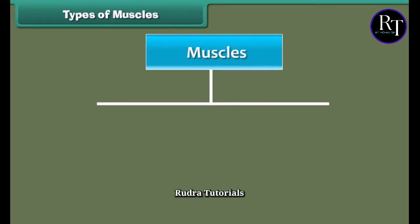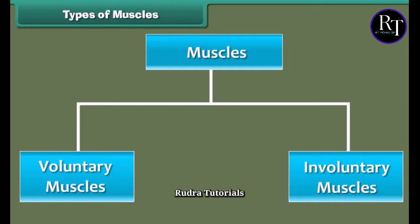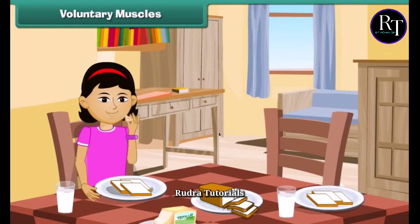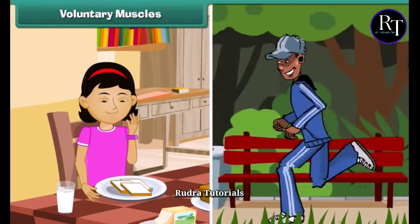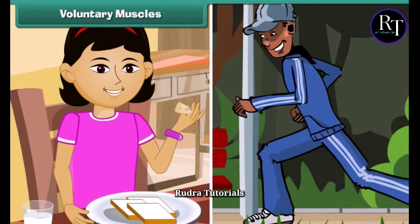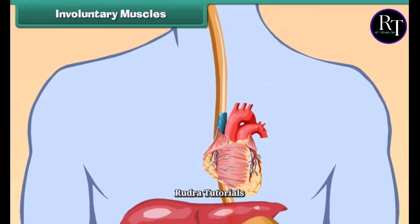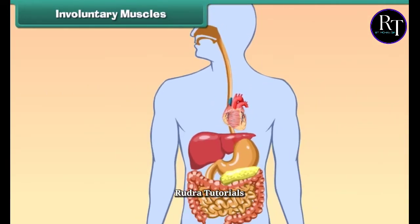According to the nature of their functions, muscles are of two types: voluntary muscles and involuntary muscles. Some actions are performed whenever we wish — like eating, walking, etc. — and we can start or stop these actions whenever we want. Muscles that carry out these actions according to our wishes or volition are called voluntary muscles, and movements brought about by them are called voluntary movements. Our arms and legs contain voluntary muscles. The functions of the stomach, intestines, and heart go on in a fixed manner and are not dependent on our wishes. Such muscles are called involuntary muscles, and their movements are called involuntary movements.